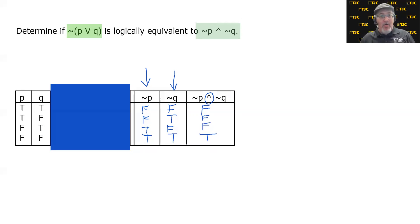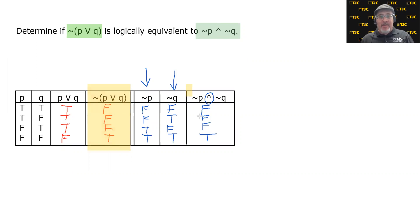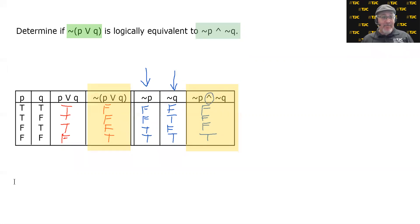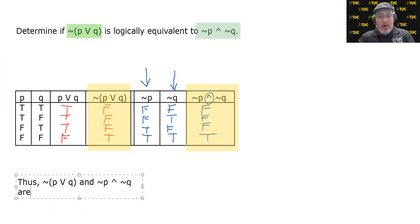Now let's compare, because we are comparing the last column of the truth table for the first statement and the last column for the second statement. And they are exactly the same. Thus, the negation of P disjunction Q and the negation of P conjunction the negation of Q are logically equivalent — meaning yes, this is precisely the other DeMorgan's Law for logic.